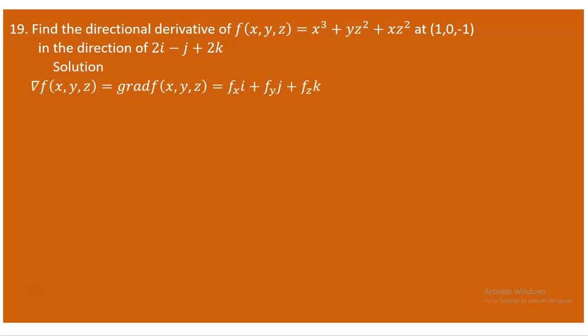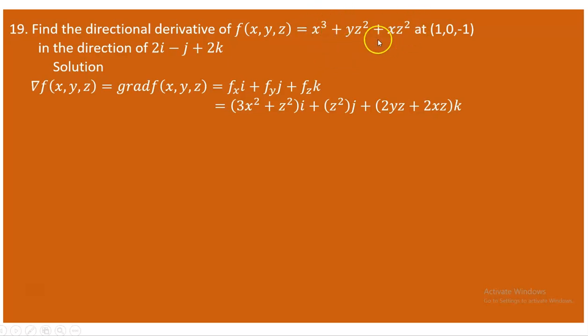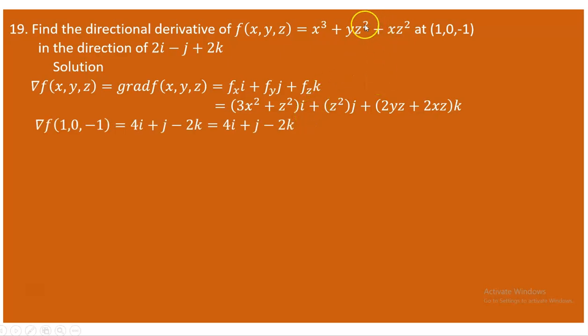The gradient of the function is obtained as the partial derivative of f with respect to x along i, the partial derivative of f with respect to y along j, and the partial derivative of f with respect to z along k. The partial derivative of f with respect to x is 3x² + z², the partial derivative with respect to y is z², and the partial derivative with respect to z is 2yz + 2xz.